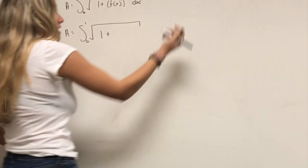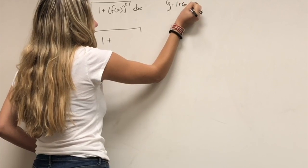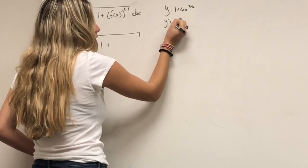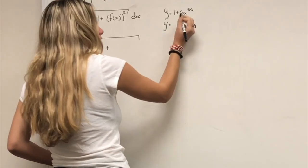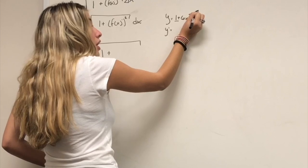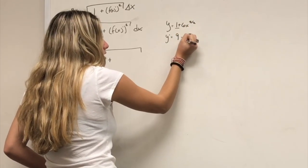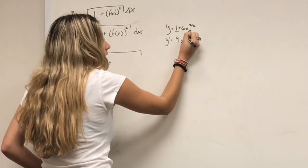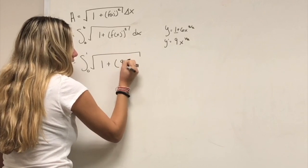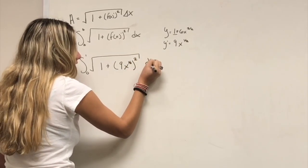We find the derivative: y = 1 + 6x^(3/2). The derivative of 1 is 0, and (3/2) times 6 is 9, so y' = 9x^(1/2). Plugging into the arc length formula gives the integral of the square root of 1 plus (9x^(1/2))² dx.